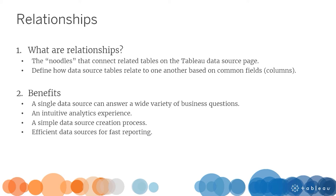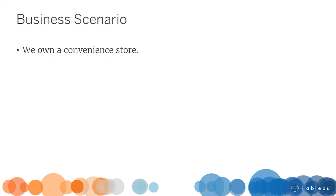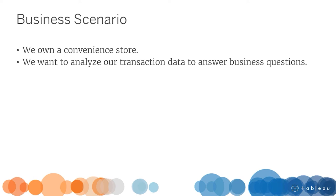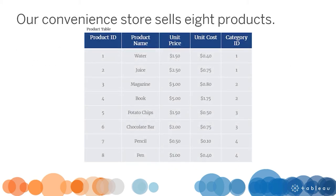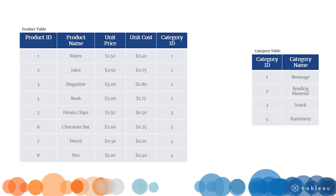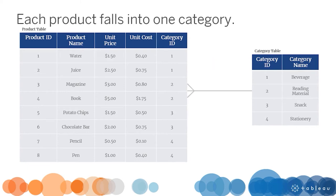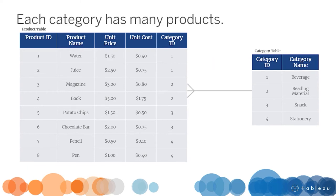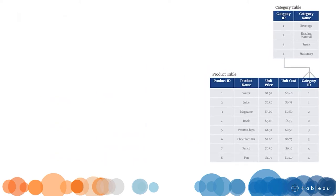Before jumping into Tableau Desktop, let's familiarize ourselves with our business scenario. We own a convenience store and want to analyze our transaction data to answer business questions. Our convenience store sells eight products. Each product has a unique product ID, a product name, unit price, and unit cost. Each product falls into one category. Each category has many products. The line between the tables signifies this one-to-many relationship. The two tables relate based on a common field, Category ID.